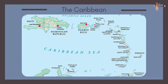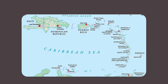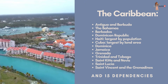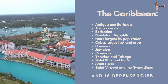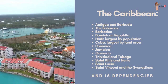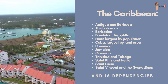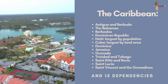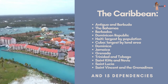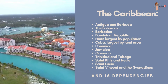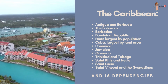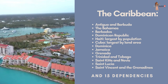The Caribbean consists of Antigua and Barbuda, the Bahamas, Barbados, Dominican Republic, Haiti, Cuba, Dominica, Jamaica, Grenada, Trinidad and Tobago, St. Kitts and Nevis, St. Lucia, St. Vincent and the Grenadines, and 15 dependencies.